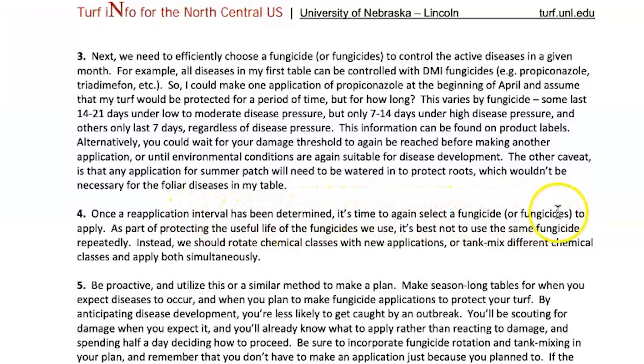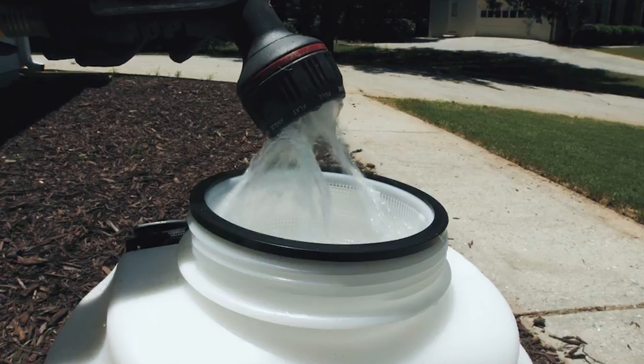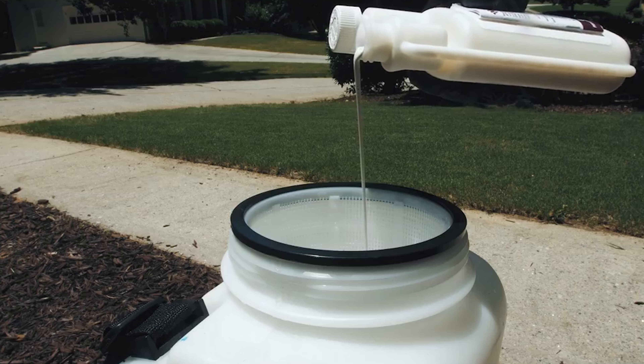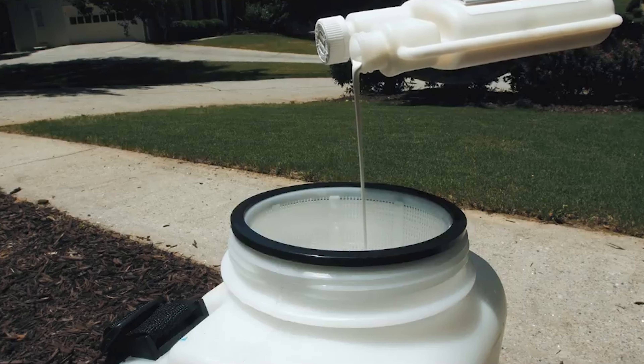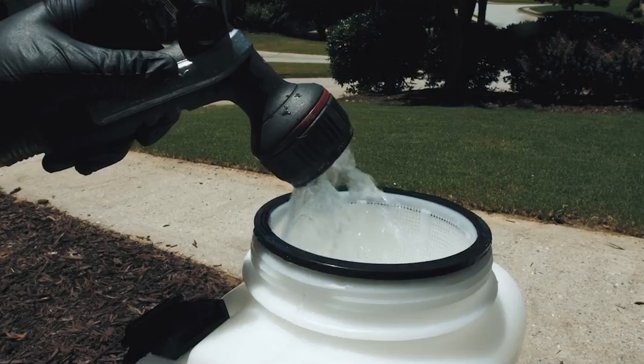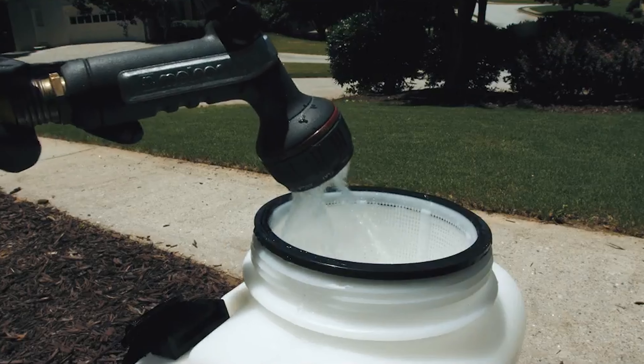Fourth, once a reapplication interval has been determined, select a fungicide or fungicides to apply. To protect the useful life of fungicides, it's best not to use the same one repeatedly. Instead, rotate chemical classes with each new application, or tank mix different chemical classes and apply both simultaneously. That's where the fungicide rotation idea really comes into play — use one chemical for a set amount of time, then rotate to a different one until you've effectively gotten the disease under control.